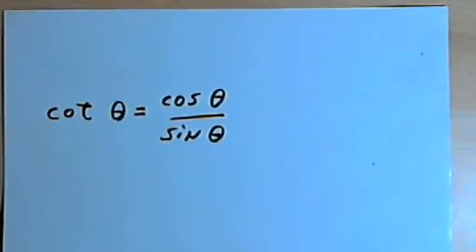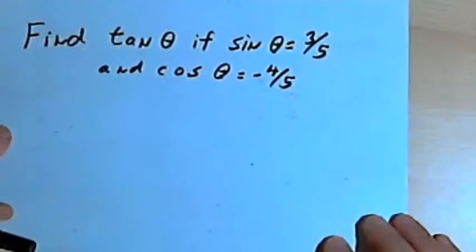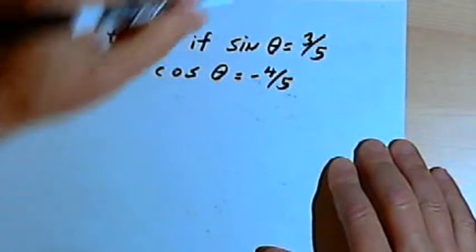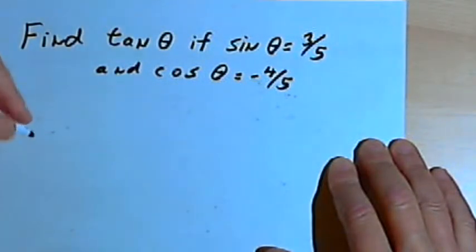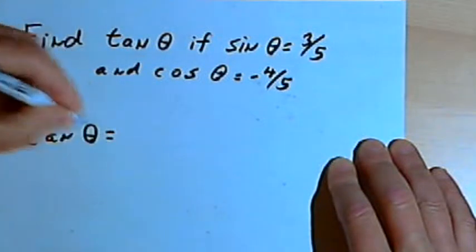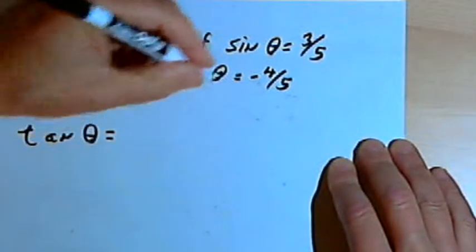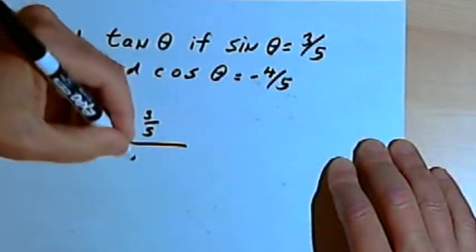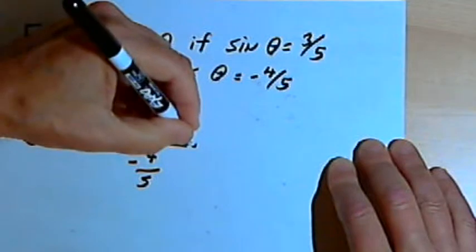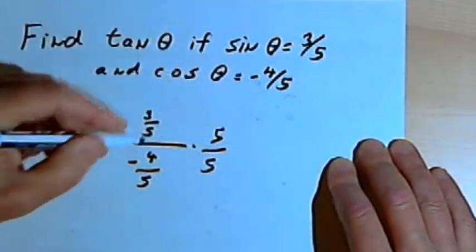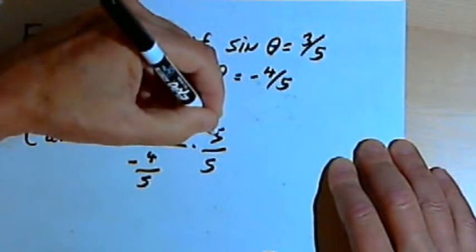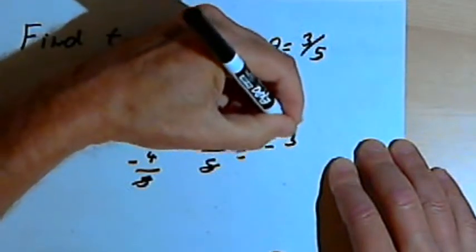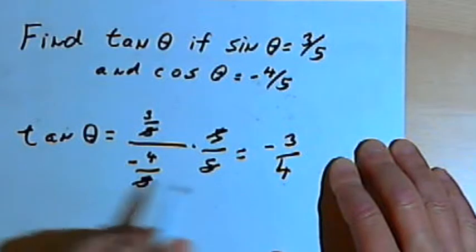So let's take those two quotient identities and work a couple of problems. Find the tangent of theta if the sine of theta equals 3 over 5 and the cosine of theta equals negative 4 over 5. The tangent of theta, by the quotient identity, equals the sine of theta, which is 3 over 5, divided by the cosine of theta, which is negative 4 over 5. Multiplying by 5 over 5 gets rid of the 5s, and I'm left with negative 3 over 4 for the tangent of theta.